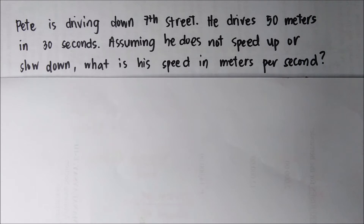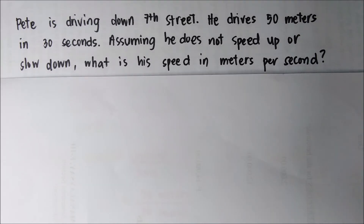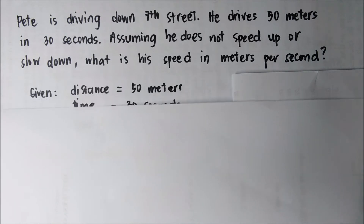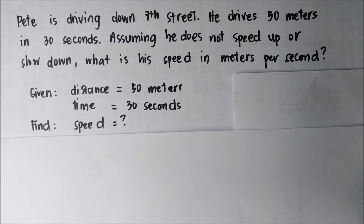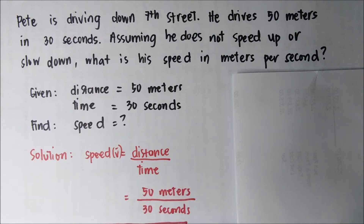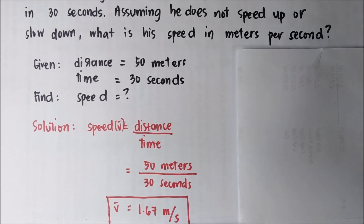Now let's have a problem related to speed. Pete is driving down 7th Street. He drives 50 meters in 30 seconds. Assuming he does not speed up or slow down, what is his speed in meters per second? In problem solving, we write what is given, then what is being asked for, then the solution starting with your formula. Given: distance = 50 meters, time = 30 seconds. We're looking for speed. The formula for speed is distance over time, so 50 meters divided by 30 seconds gives us 1.67 meters per second.